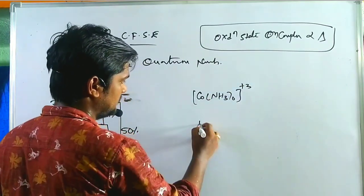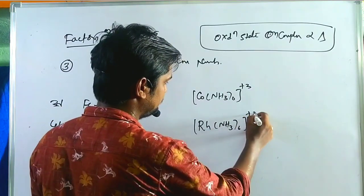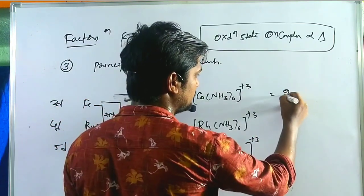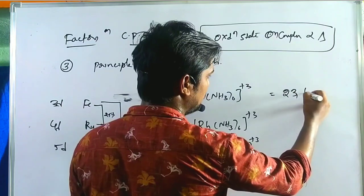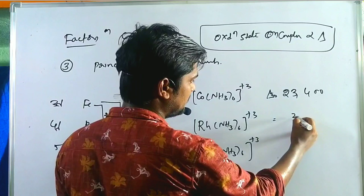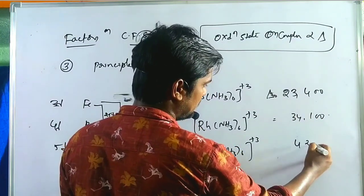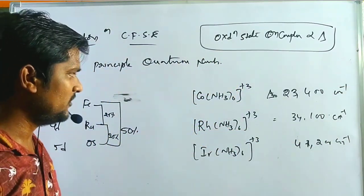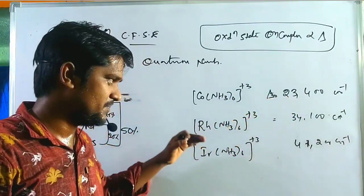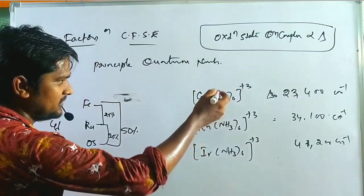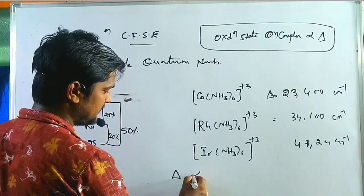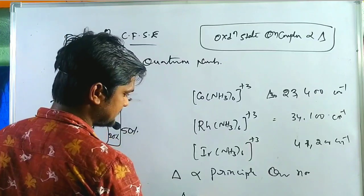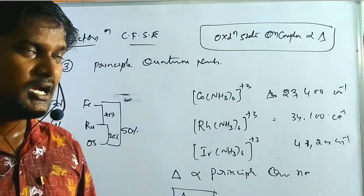For example: [Co(NH₃)₆]³⁺ has 23,400 cm⁻¹, [Rh(NH₃)₆]³⁺ has 34,100 cm⁻¹, and [Ir(NH₃)₆]³⁺ has 41,200 cm⁻¹. The 3d complex shows the least splitting energy compared to 4d and 5d. We conclude that crystal field splitting is directly proportional to the principal quantum number — delta is directly proportional to n.